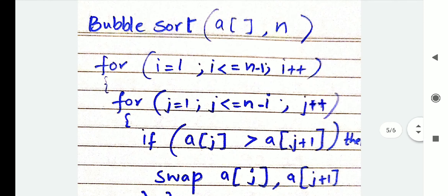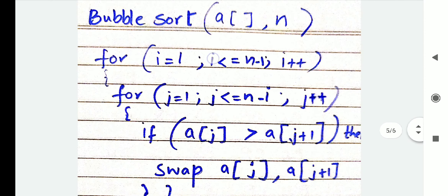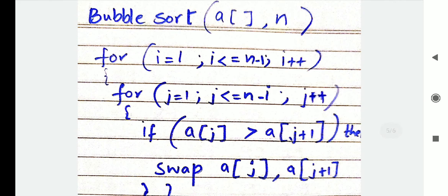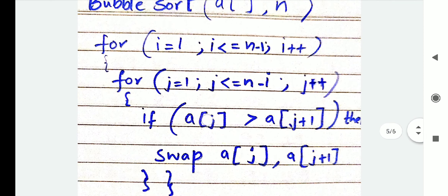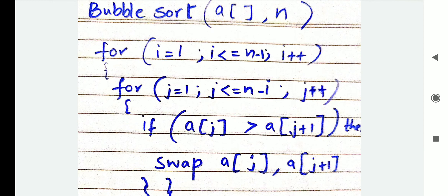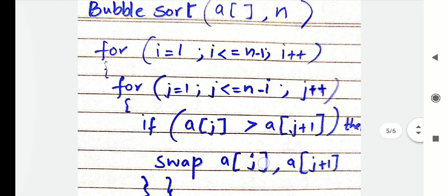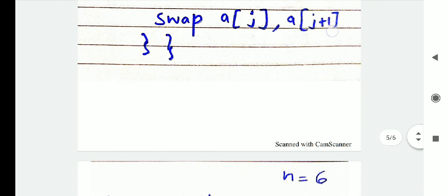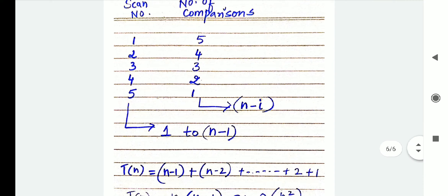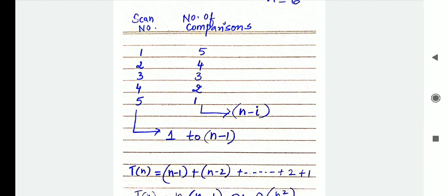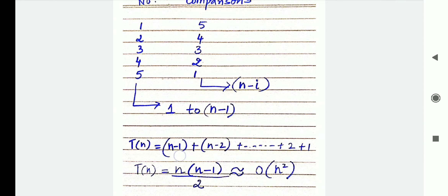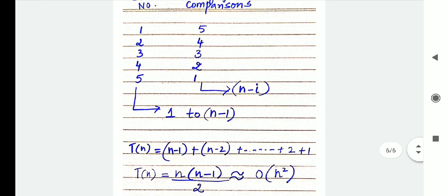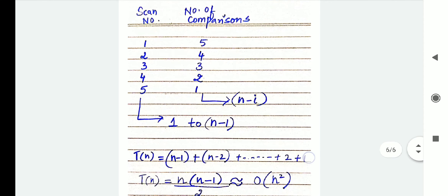These two loops give you one for scanning and one for comparisons. Then each element: a[j] is compared with a[j+1], the next element. If a[j] is greater, swap the elements. The swapping is written as the classic three lines: temp = a[j]; a[j] = a[j+1]; a[j+1] = temp. Now for the complexity: the total number of comparisons goes from n minus 1, n minus 2, and so on down to 1 comparison, which sums to n(n-1)/2. That gives a Big O notation of O(n²).